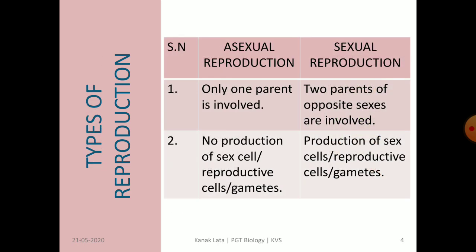Let us see what are the different types of reproduction. Broadly, reproduction is classified under two major headings, i.e., asexual and sexual.